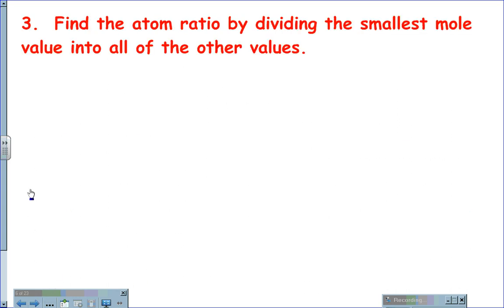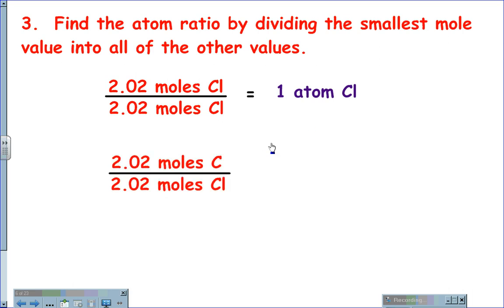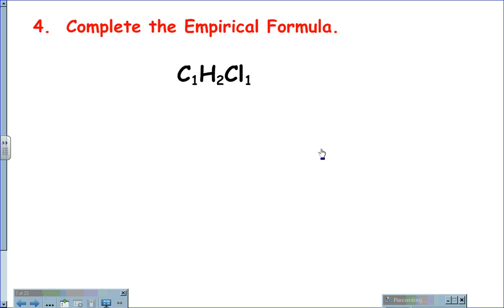The next thing we are going to do is find the actual ratio. We do this by dividing the smallest mole value into all of the other mole values. From our problem, 2.02 is the smallest value. Therefore, 2.02 moles of chlorine divided by 2.02 gives us one atom of chlorine; 2.02 moles of carbon divided by 2.02 gives us one atom of carbon; and 4.02 moles of hydrogen divided by 2.02 gives us two atoms of hydrogen. So our empirical formula is C1H2Cl1 — one carbon atom for every two hydrogen atoms for every one chlorine atom.